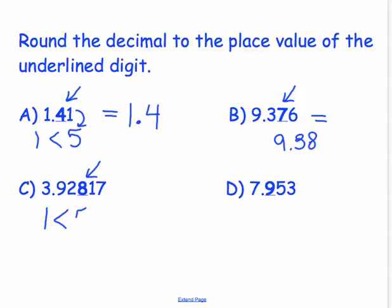and because that 1 is less than 5, we are going to round down. And this number will round to 3.928.